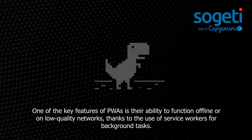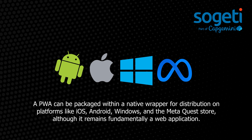One of the key features of PWAs is their ability to function offline or on low-quality networks, thanks to the use of service workers for background tasks. A PWA can be packaged within a native wrapper for distribution on platforms like iOS, Android, Windows, and the MetaQuest store, although it remains fundamentally a web application.